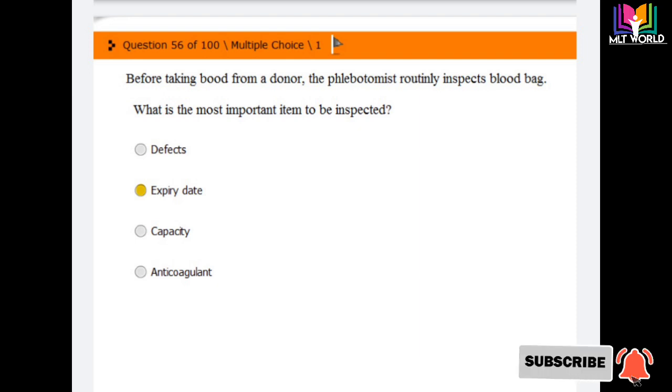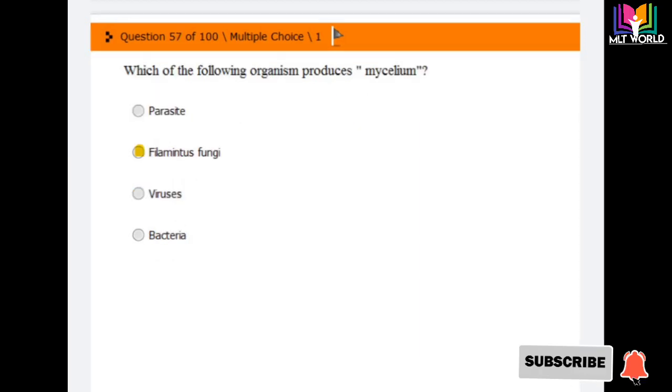Question number 57: Which of the following organisms produce mycelium? Options are parasites, filamentous fungi, viruses, and bacteria. The answer is filamentous fungi. If it's written fungi also, you can choose that. Filamentous fungi will produce the mycelium.